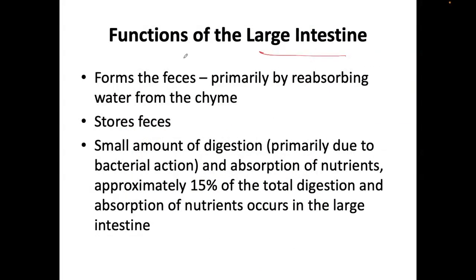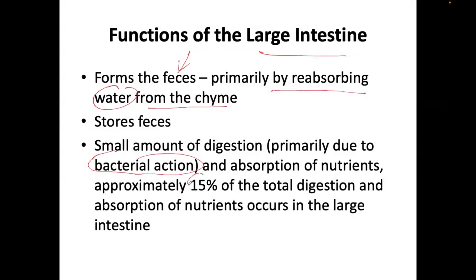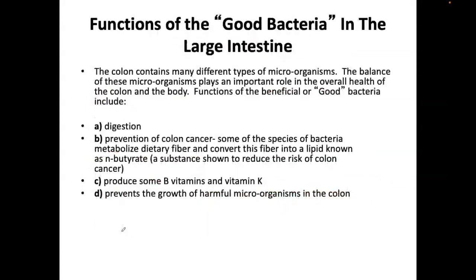The function of the large intestine is that it forms feces primarily by reabsorbing water from the chyme. If there's too much water, you have diarrhea; too little, and you have constipation. There's a very small amount of digestion that takes place in the large intestine — primarily due to the body's own bacterial action. There's also some absorption of nutrients, but only 15% of total digestion and absorption occurs in the large intestine.